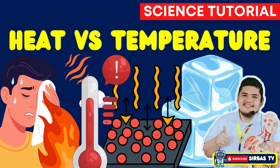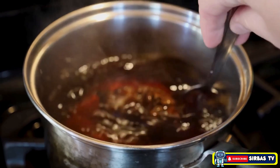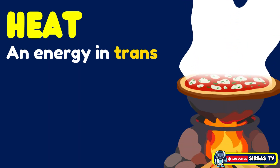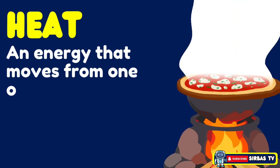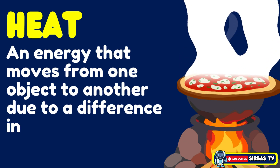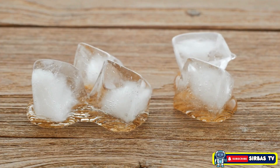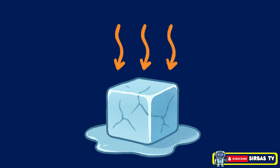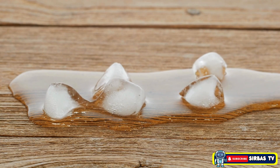Let's break them down one at a time. Heat as energy in transit: when you touch a hot spoon, heat is transferred from the spoon to your hand. In physics, heat is defined as energy in transit — energy that moves from one object to another due to a difference in temperature. Temperature itself does not move; only heat does. This same idea explains why ice melts. When ice is exposed to something warmer than itself, heat flows from the surroundings into the ice, and that transfer of energy causes it to melt.